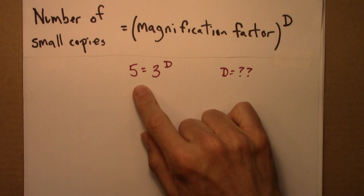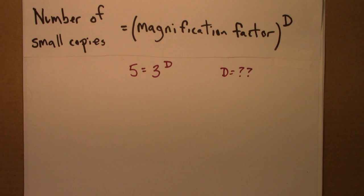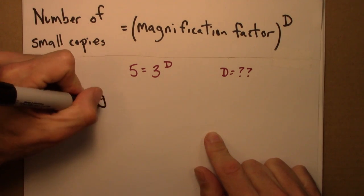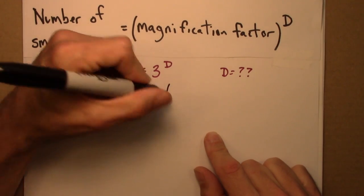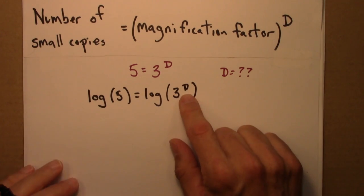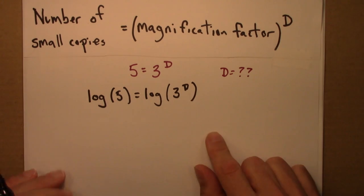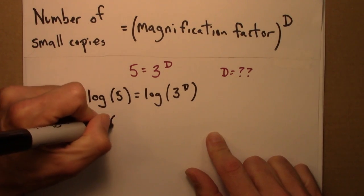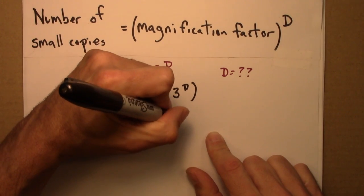Back to the fractal. We have this equation: 5 equals 3 to the d, and would like to solve for d. To do so, we'll take the logarithm of both sides of this equation. So log 5 equals log 3 to the d. By the logarithm property for exponents, log 3 to the d is the same thing as d log 3. So log 5 is equal to d log 3.